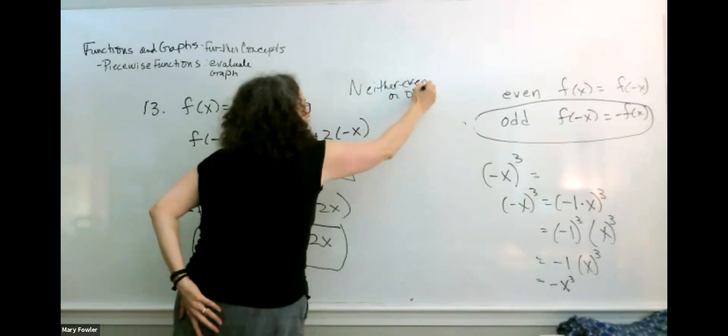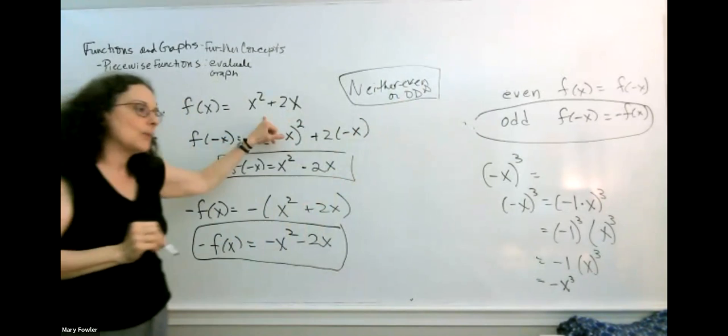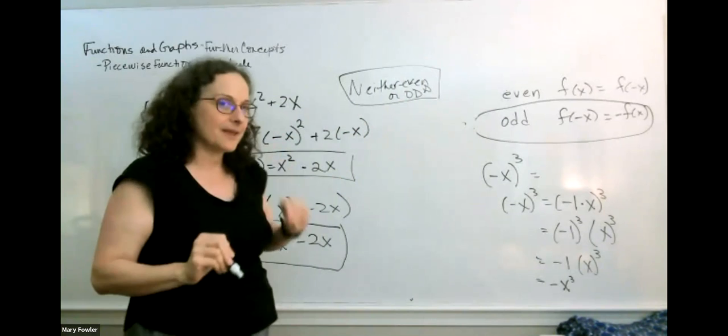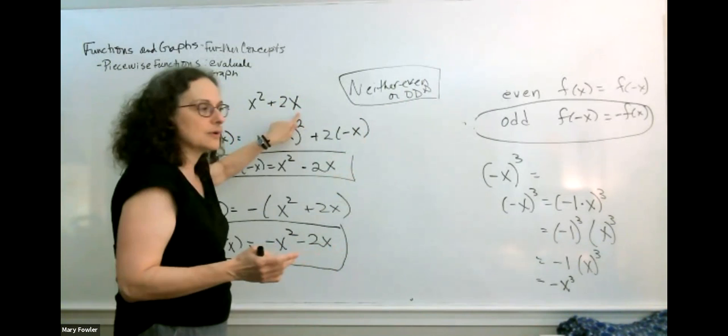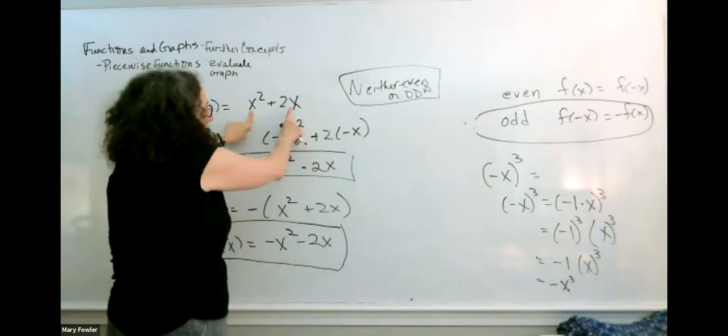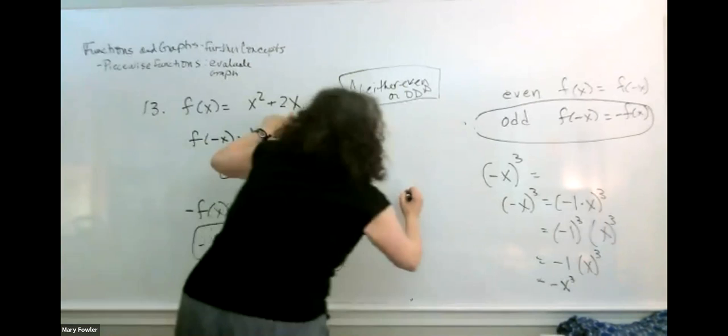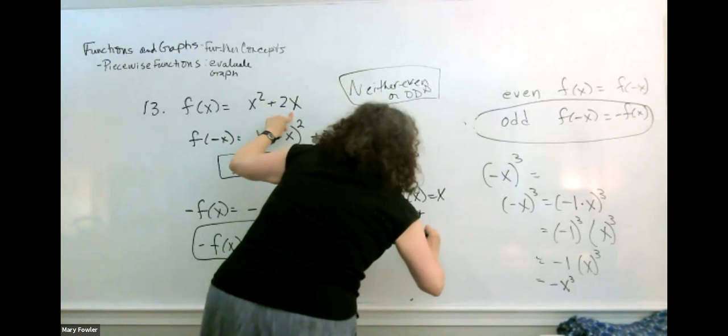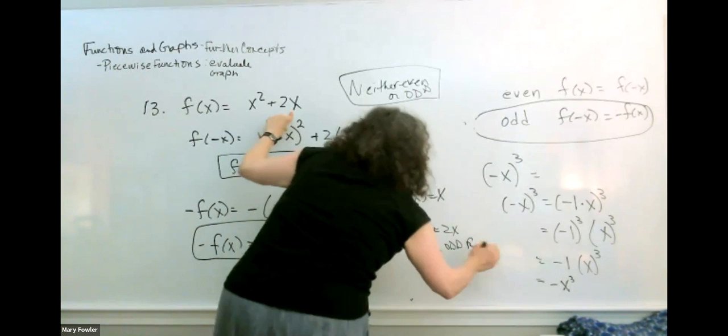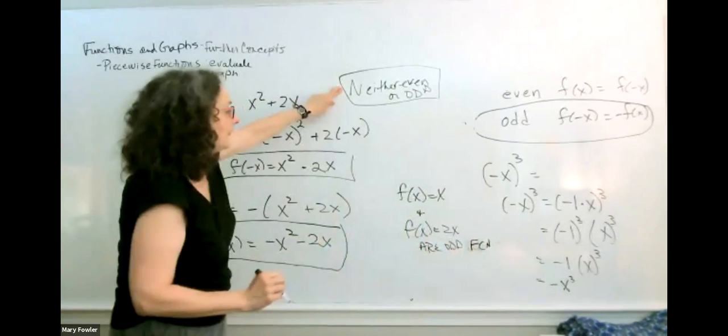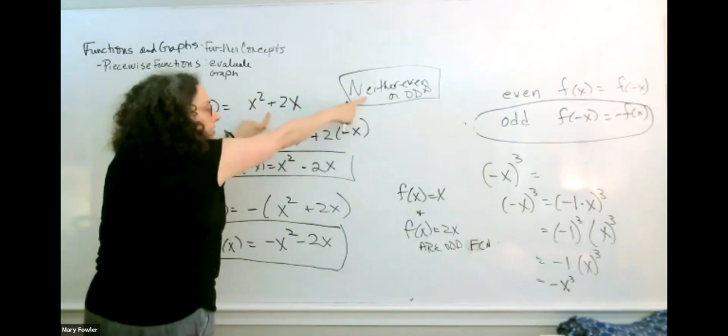And before we move on, I want you to think about what this function is made of. It's the sum of x squared, where x squared is our classic even function. But what we add on to it is 2x, and x and 2x are an odd function. So we added together an even function and an odd function. And you can go and check on the side why f of x equals x and f of x equals 2x are odd functions. All right. And when we added them together, the even and the odd, we got a function that was neither even or odd.